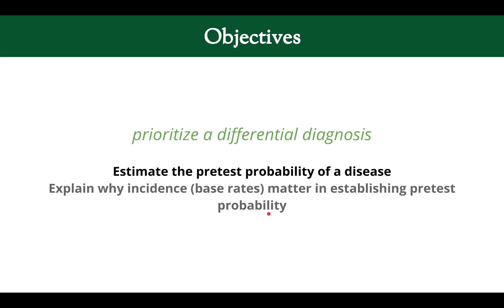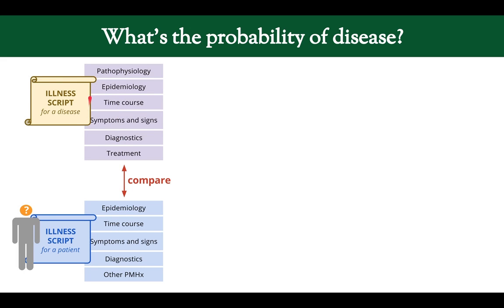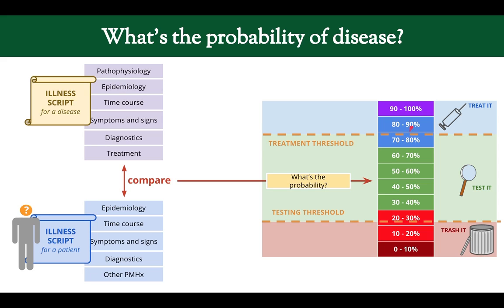Pretest probability is your suspicion that a patient has a disease before you do any testing. We compare the patient's illness script to the disease illness script, as discussed in a previous video. The more these things match, the higher our probability, and we assign a probability somewhere between 0 and 100 — we never reach either extreme.